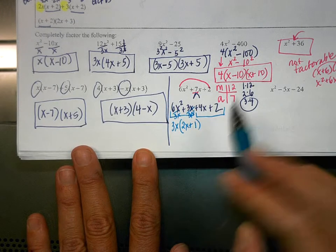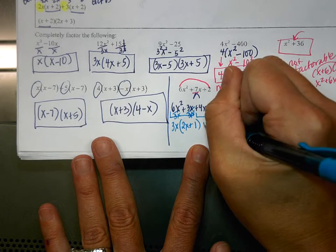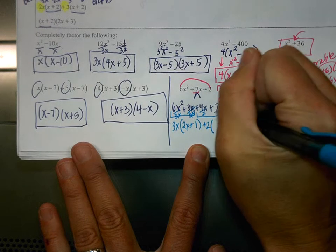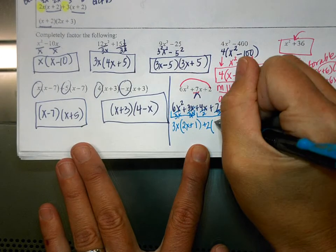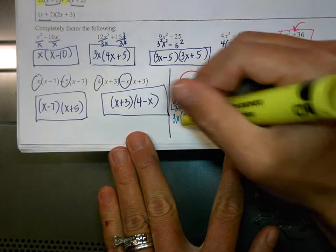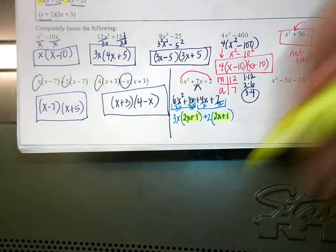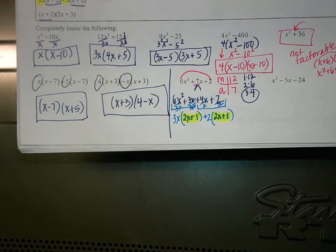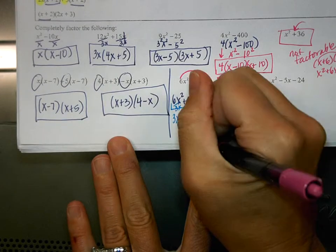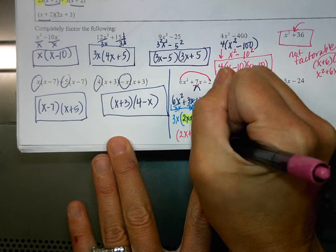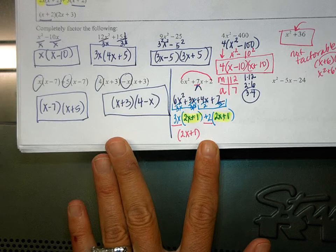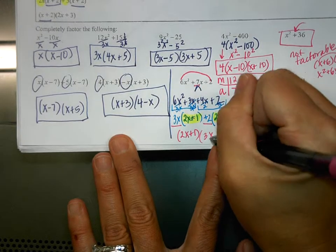What is the GCF of the second group? 2 — and I would write that as a plus 2. When I divide these by 2, what am I left with? 2x plus 1. Notice that these parentheses are the same. If they are not the same, you did something wrong. So now my GCF is 2x plus 1, because that's my like terms that I'm now factoring out. And your second parenthesis is what's in front, which is 3x plus 2.